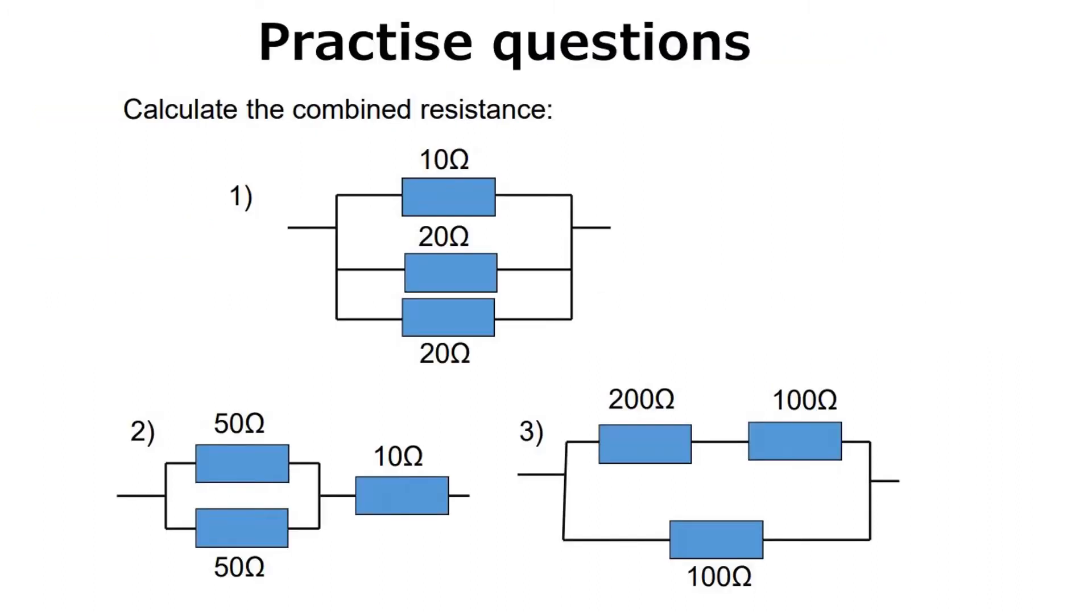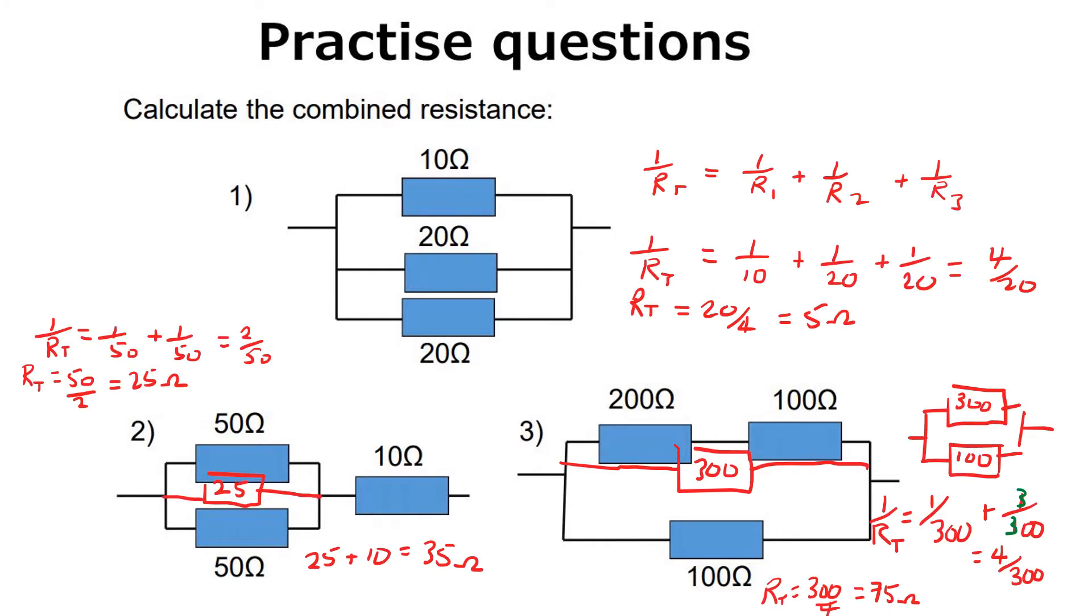As a starter activity, I'd like you to pause the video and calculate the combined resistance for these three circuits shown here. Now self-mark your work: circuit one should be 5 ohms, circuit two is 35 ohms, and circuit three is 75 ohms. Check your working and correct as needed.